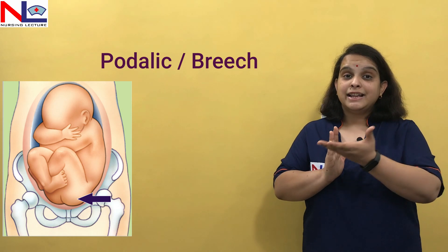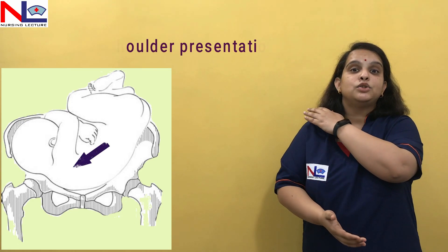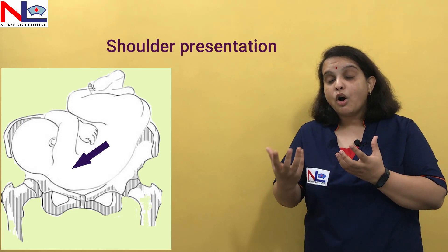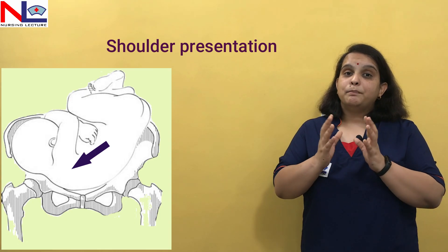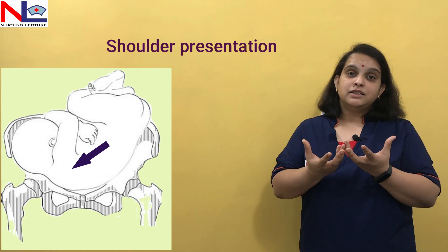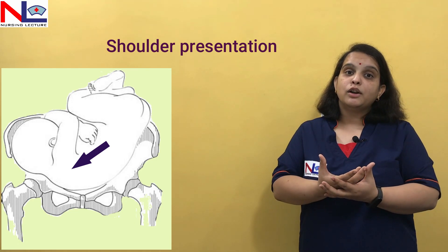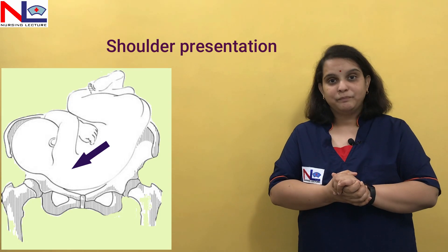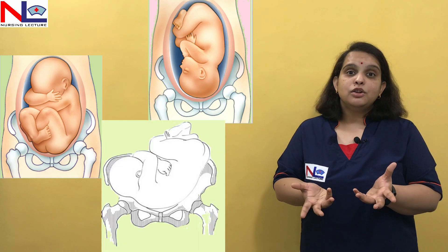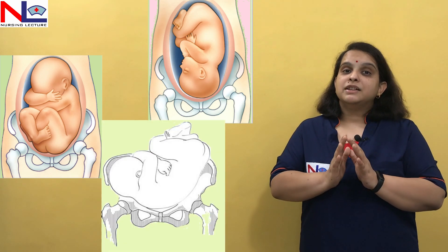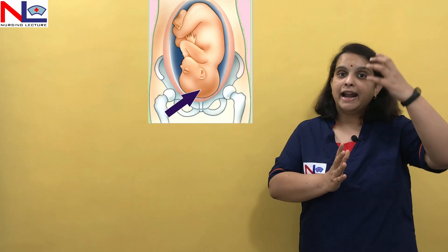If the fetus lies in a transverse manner, neither the head nor the buttock will come down. In that case, the shoulder area is the presentation occupying the lower pole of the uterus. So depending on the part of the fetal body which sinks down into the lower pole, that is called the presentation — it could be cephalic, breech (podalic), or shoulder. The most common presentation is cephalic, where the head comes down.